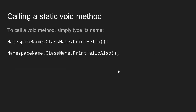So how do we call a static void method? Calling a static void method, you just type its name. You need to know the namespace and the class from which the method was created, and then you can access that method by calling namespace name dot class name dot method name. Let's work through a couple of examples together.